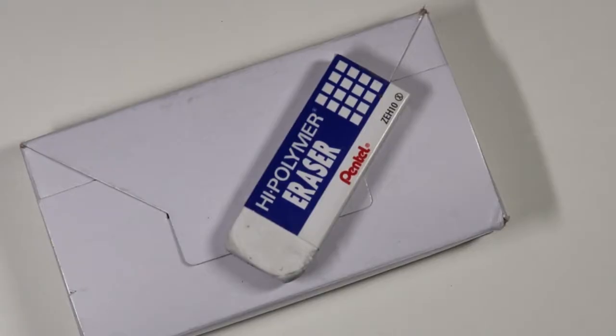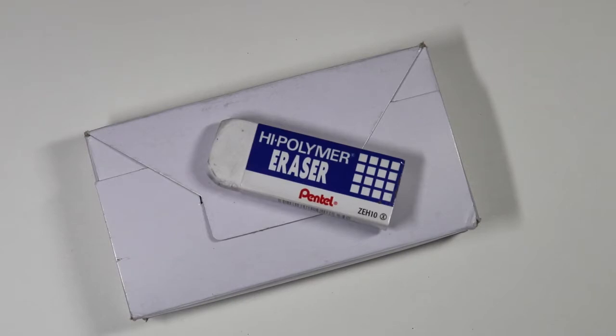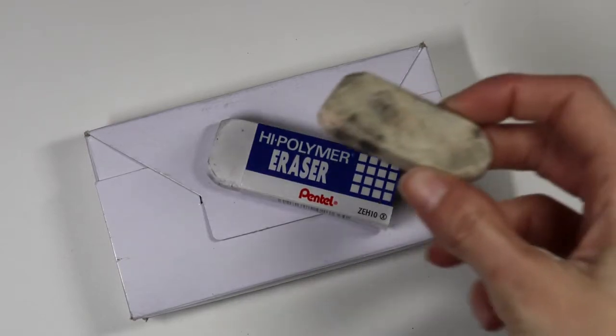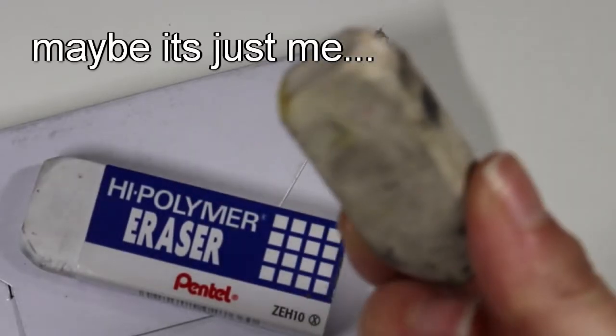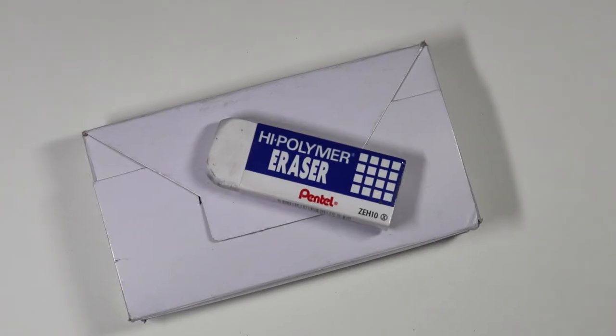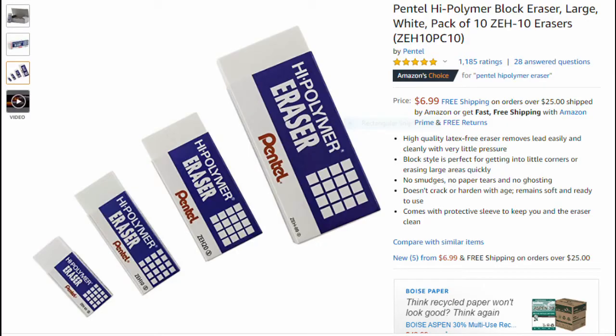Number one on my list are these high polymer erasers. Honestly, these erasers just make life easy because as an artist, it's really annoying to end up having an eraser that looks like this after using it. What I love about this is you can buy it in bulk on Amazon and it comes in a set of 10 erasers for something like six to seven dollars.